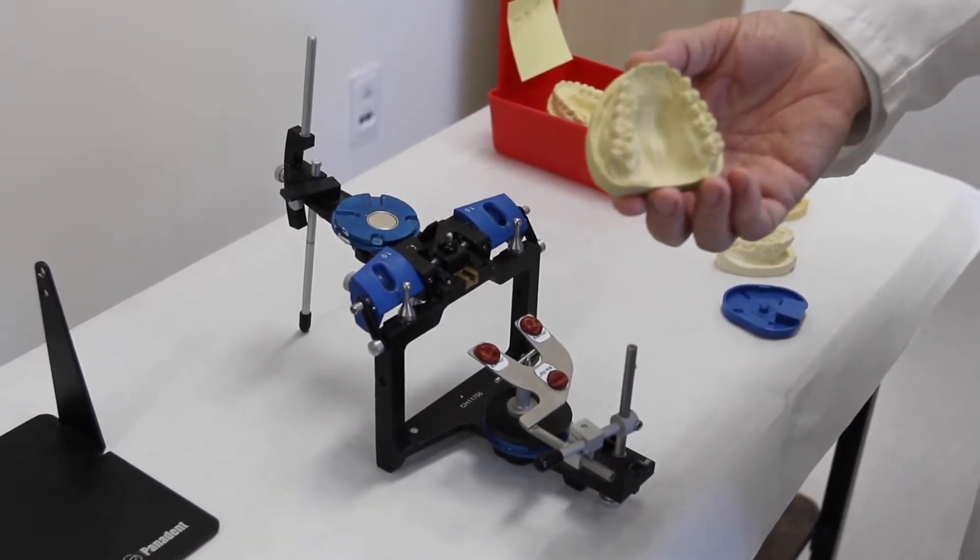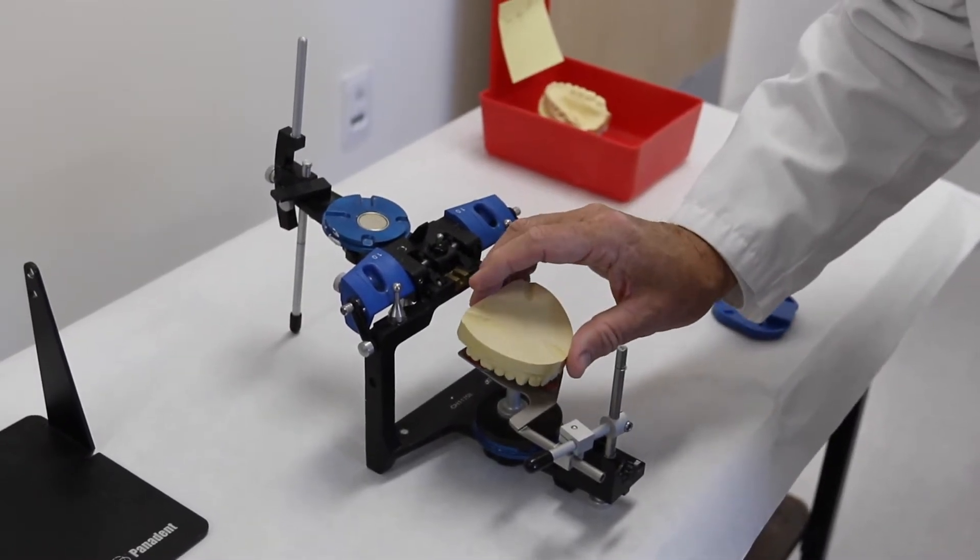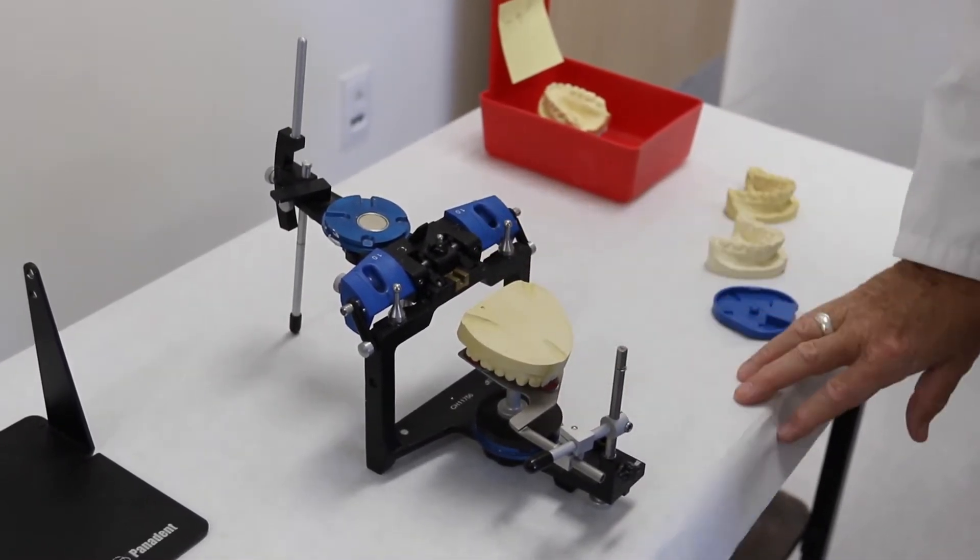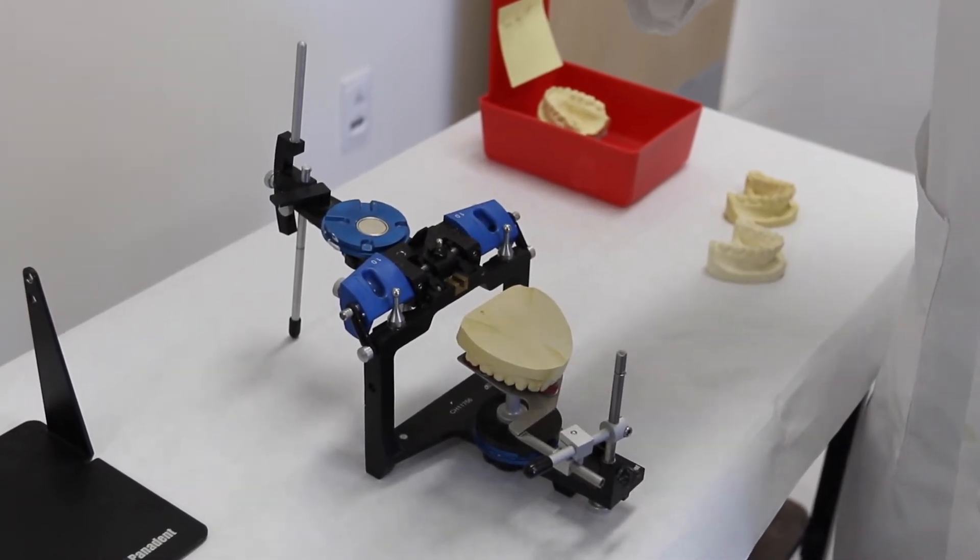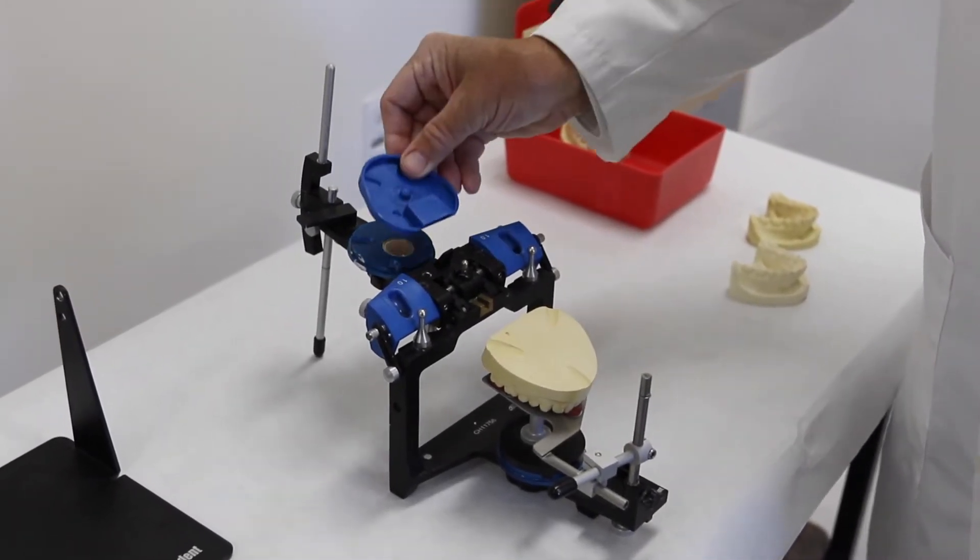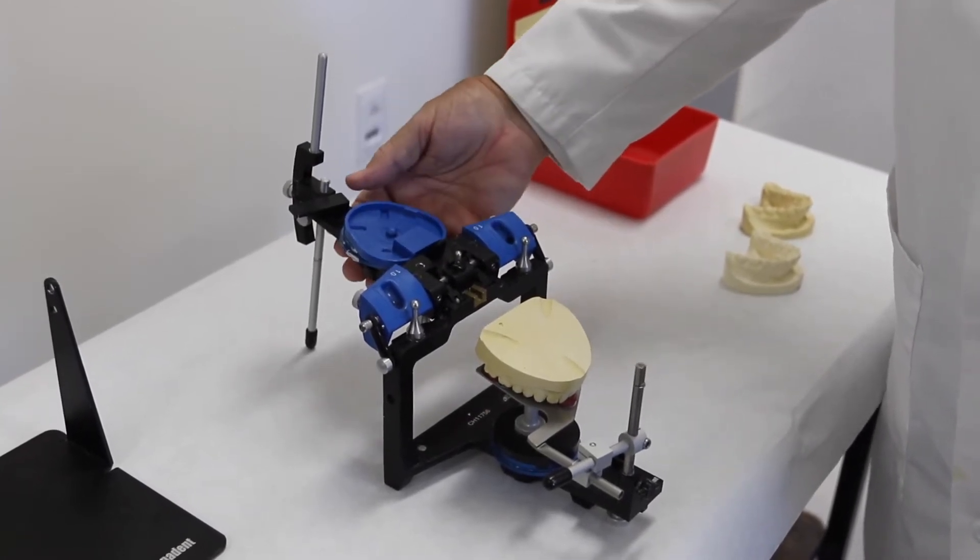You now have your model that you've trimmed and it's ready to mount. Seat it accurately into the bite registration plate and add a mounting plate to the upper member of the articulator. It's held in by magnetic force.